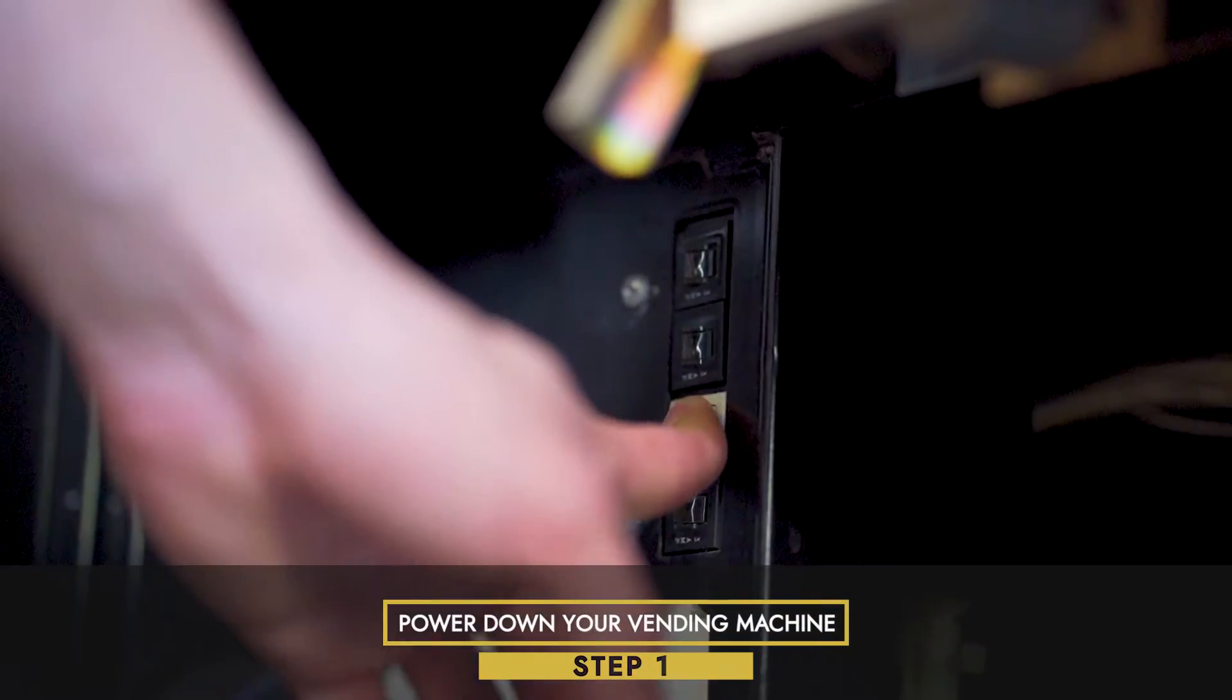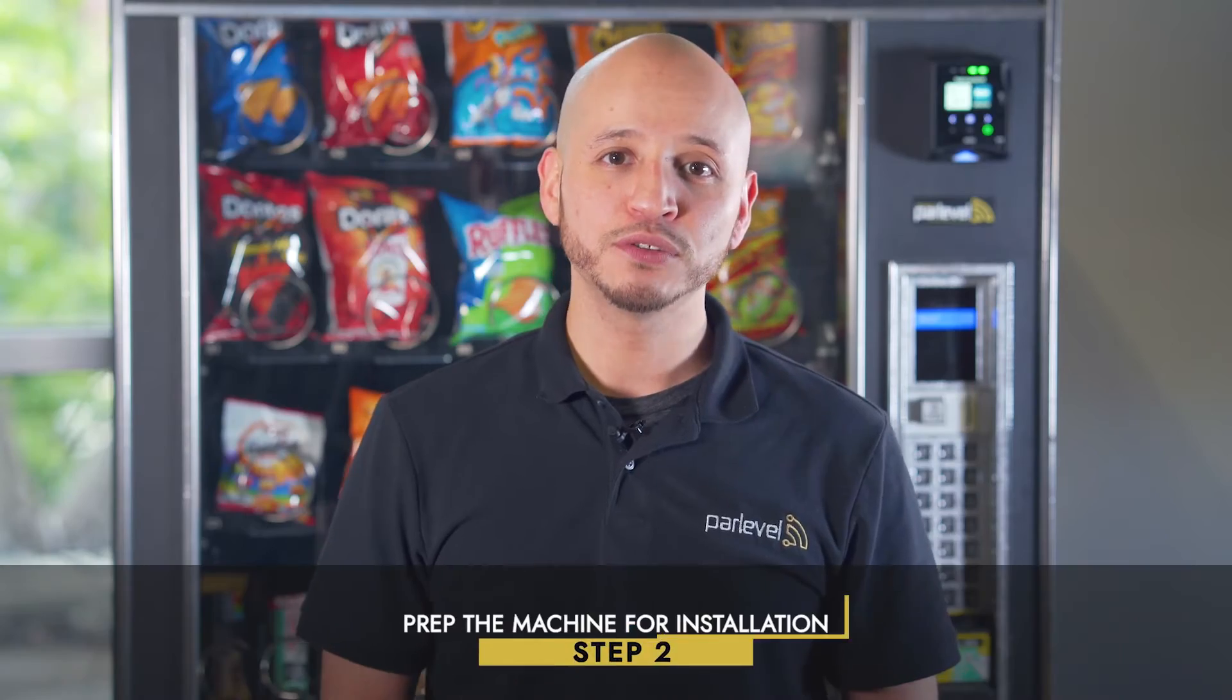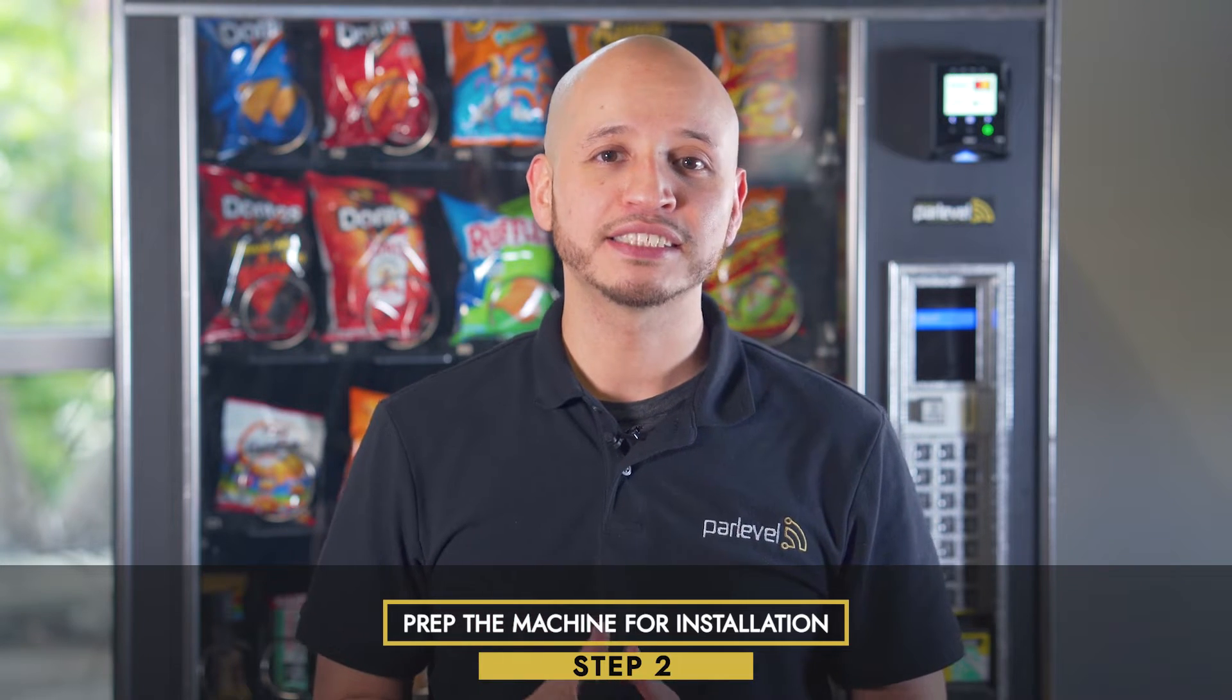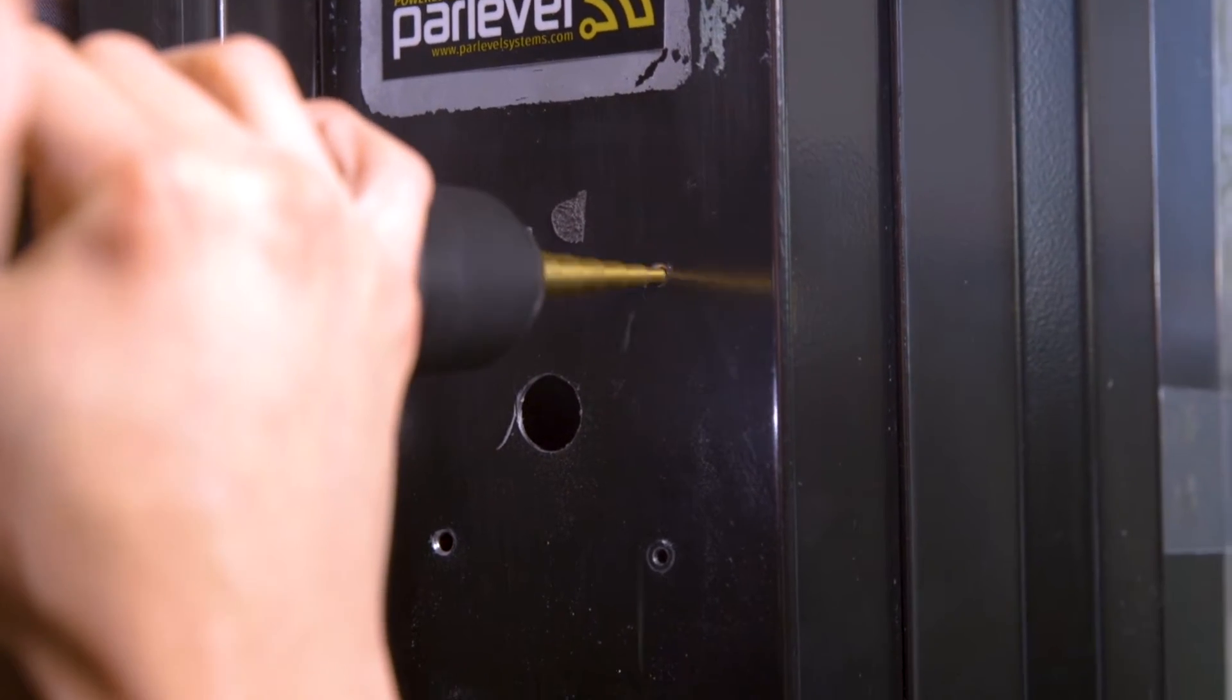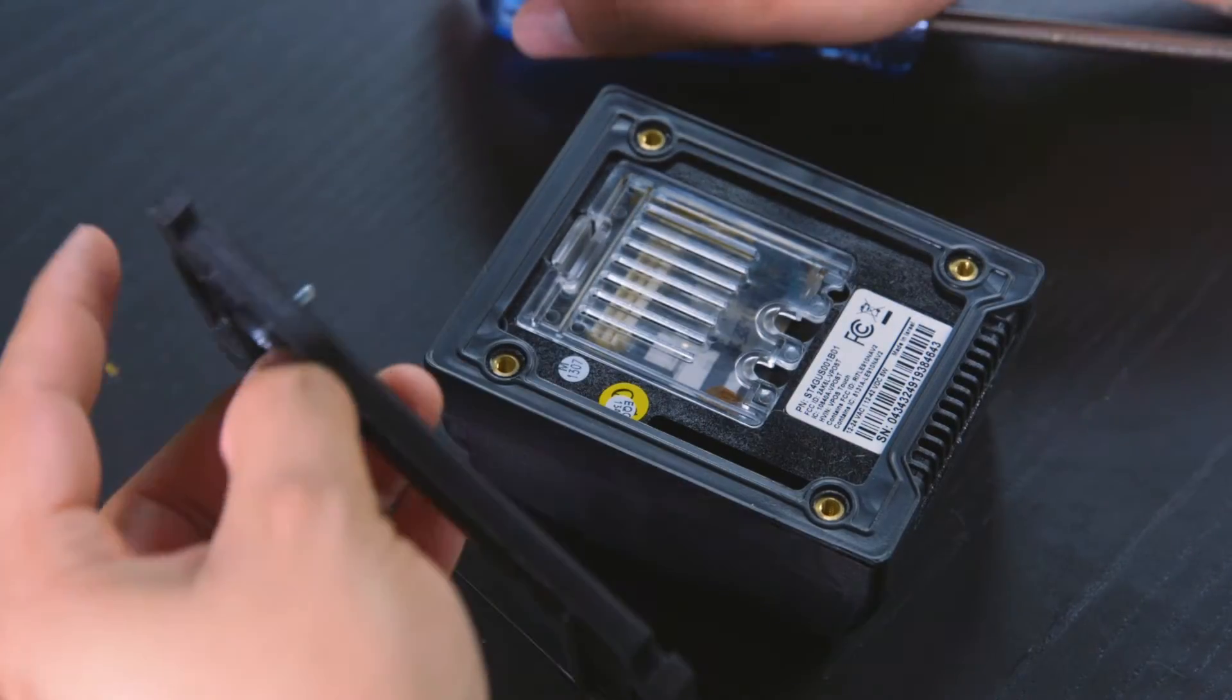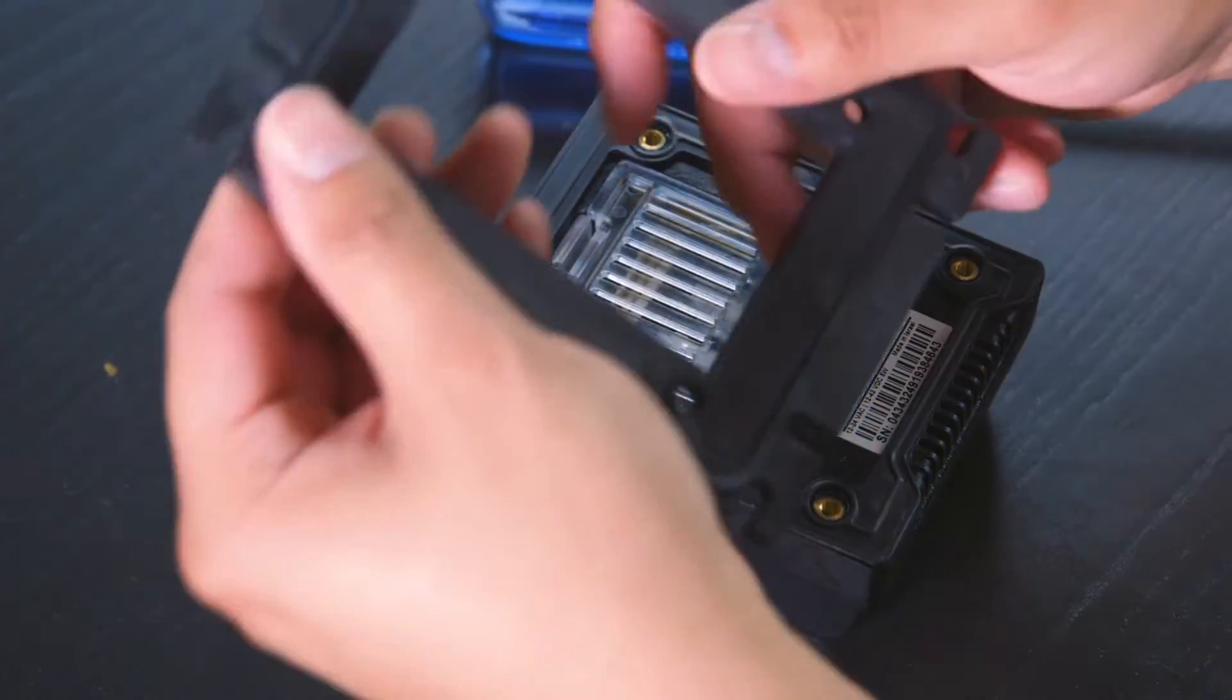Step 1, power down your vending machine. Step 2, prep the machine for installation. Remove machine knockout plate or drill holes using the PayTouch backplate as a guide. You'll want to remove the backplate from the ParLevel PayTouch device and install it where you removed the knockout plate. In this demonstration, we previously drilled out holes on our machine to mount the device, so we're ready to move forward with the next steps.